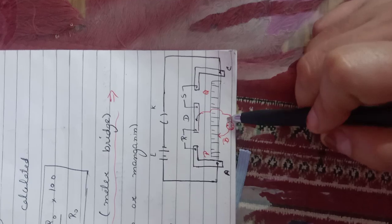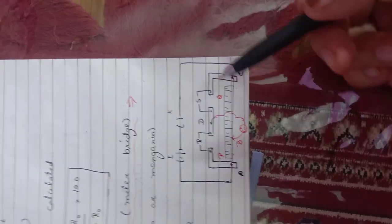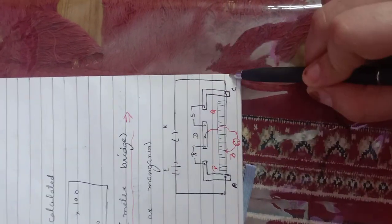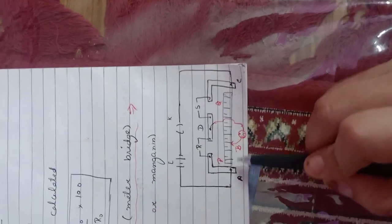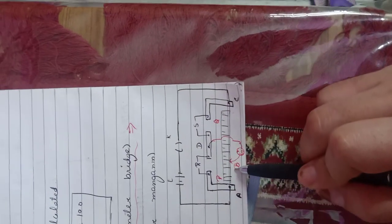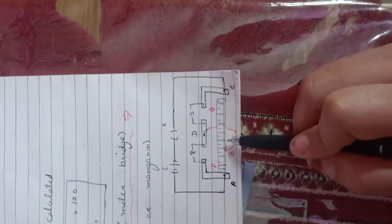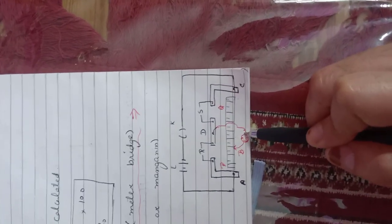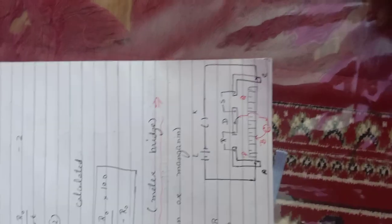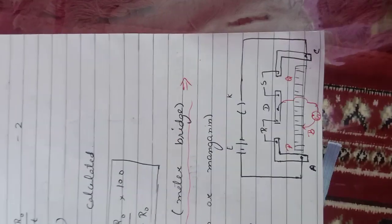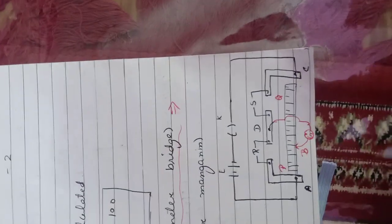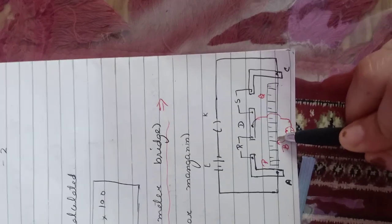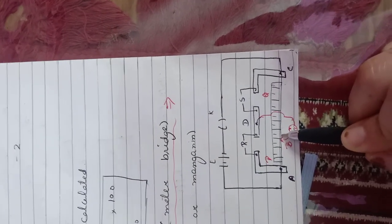We have a galvanometer here. Just like a pen, we slide the jockey on the meter scale from point A to point C, slowly. At a particular point B, the galvanometer shows zero deflection — no deflection at all. That particular point where it shows zero deflection means my bridge is balanced.